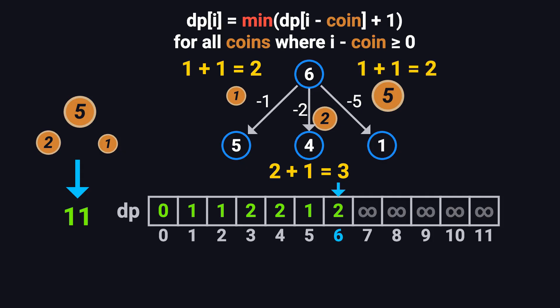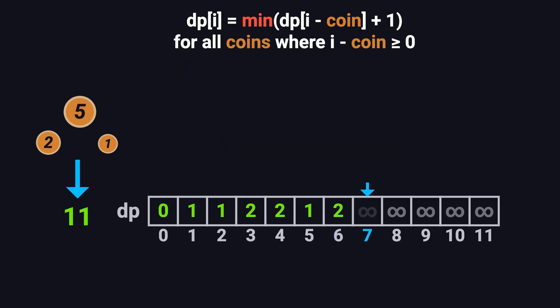Minimum is 2, so dp[6] equals 2. And that's how we go, filling in the table one cell at a time, building on previous results. That's the beauty of dynamic programming. We reuse smaller solutions to solve bigger problems.